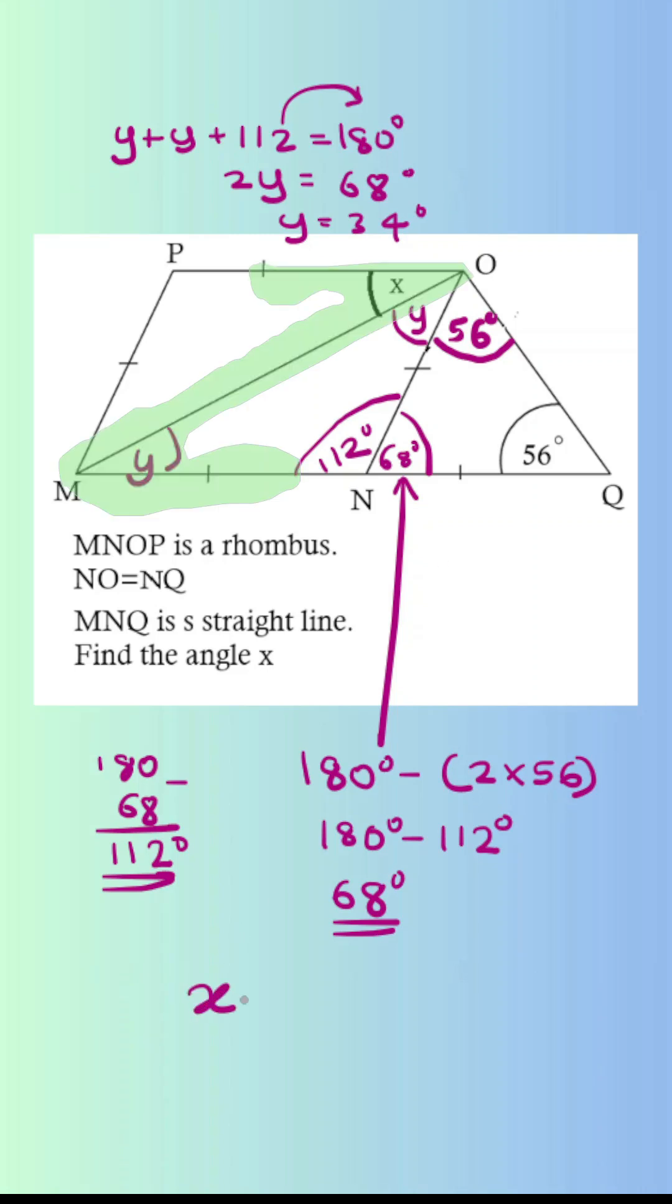However, x and y are the same because they are alternate angles. Therefore, the value of x is also 34 degrees. Done and dusted.